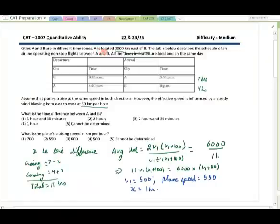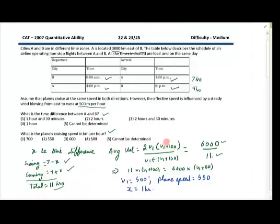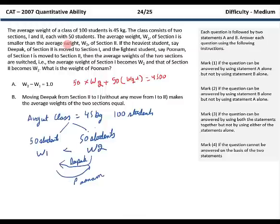A and B are 3000 km apart and the wind blows from B to A at 50 km per hour. A flight takes off from B at 8 am and reaches A at 3 pm, and then takes off from A at 4 pm and reaches B at 8 pm. There is also a time zone difference between A and B. We have been asked to calculate the time difference and the plane speed. If we assume X is the time difference, then it takes 7 minus X hours to go and 4 plus X hours to come back. So the total time the flight operates is around 11 hours. Using that you can calculate the average velocity of the flight as 6000 km divided by 11, the time it spends in the air. Which can be equated with 2V1V2 by V1 plus V2, which is the formula for average speed. You can write V2 as V1 plus 100 because there is a 50 km wind blowing. Using that you can calculate V1 as 500 and X as 1 hour. This was a question on averages.